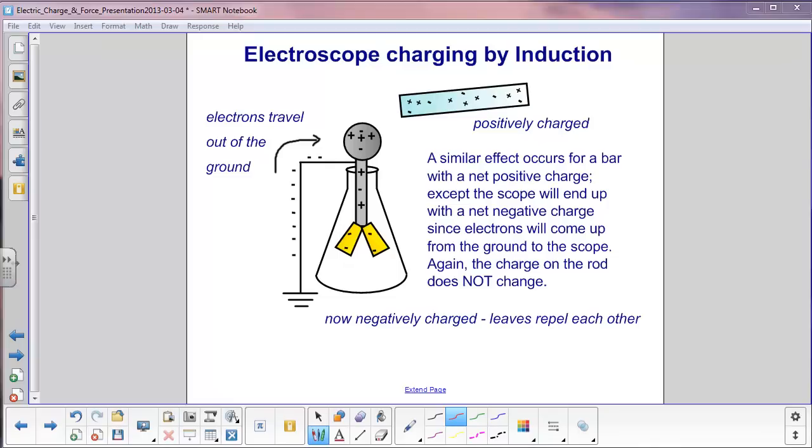We can also use a positively charged rod for induction. So over here we have a positively charged rod. We bring it near the top of the electroscope. In this case, electrons are attracted from the earth.